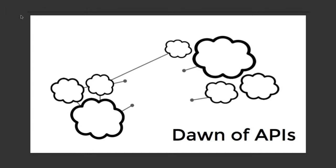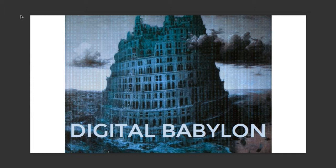Basically we have a dawn of APIs where everything is automatable. We can talk to almost every service out there, make API calls to automate the creation and destruction of resources. But what this actually creates is a zoo of various API calls and different types of APIs which behave differently.